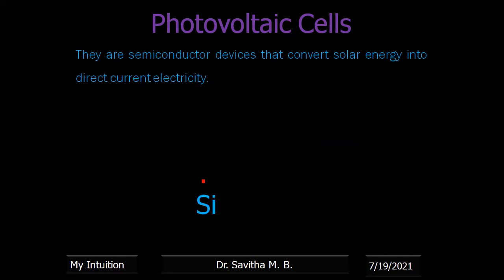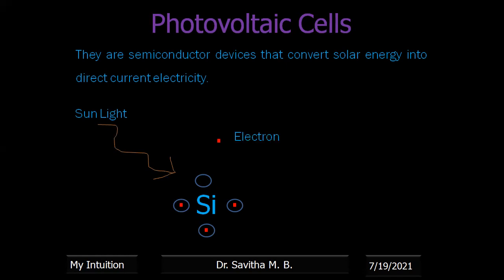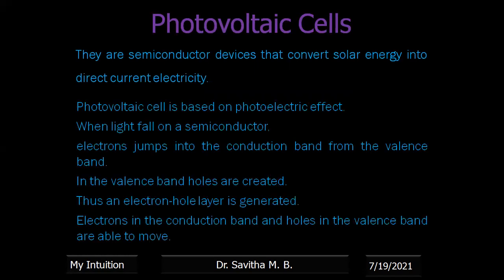Solar cells are mainly dependent on silicon, which is a semiconductor material. As you know, silicon is tetravalent — it has four valence electrons. When it is exposed to sunlight, one of the electrons gets excited. When it gets excited, a hole is also created. This electron-hole pair production is mainly responsible for the generation of electricity.